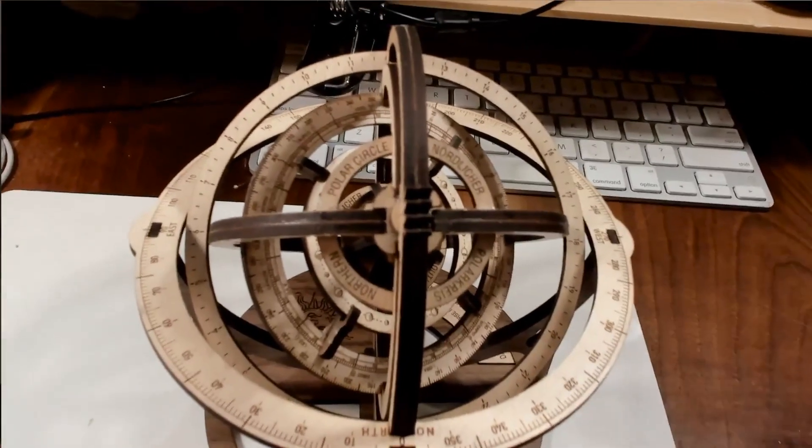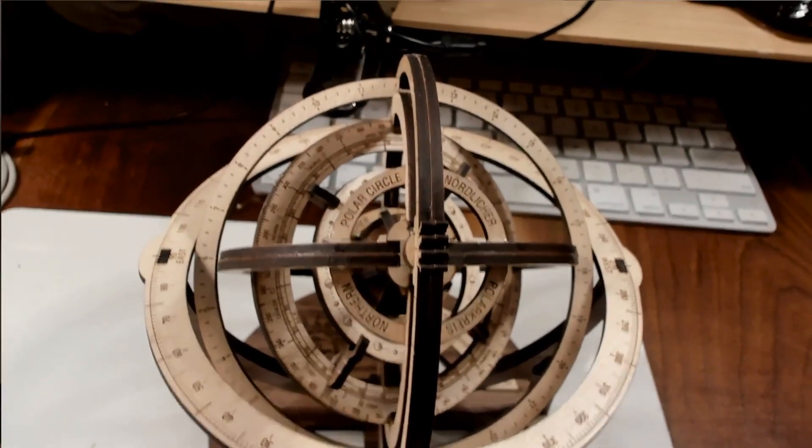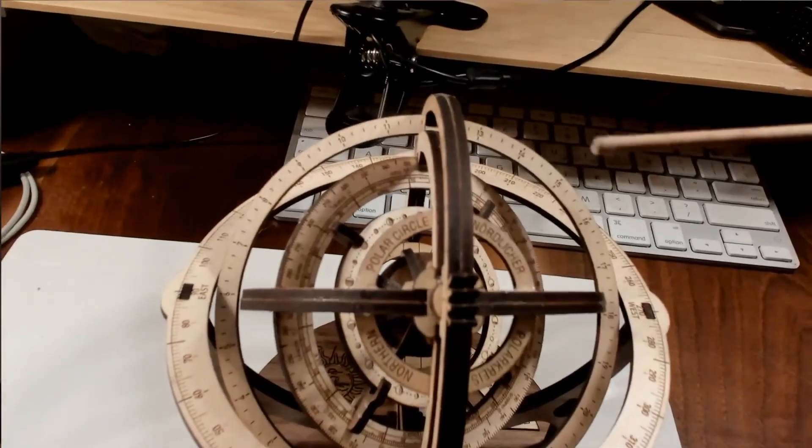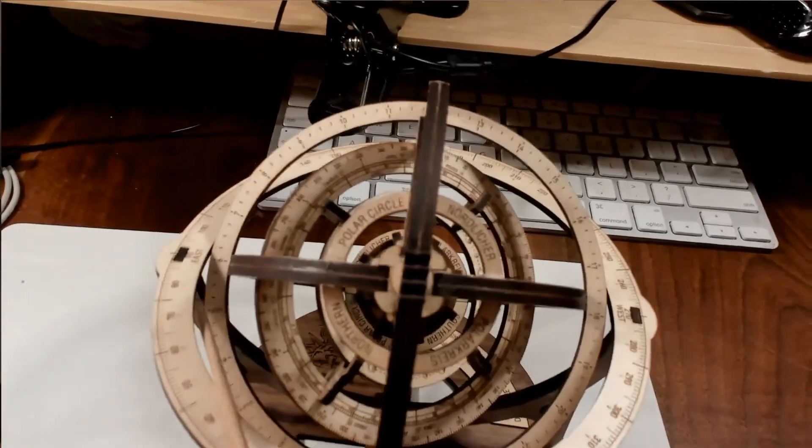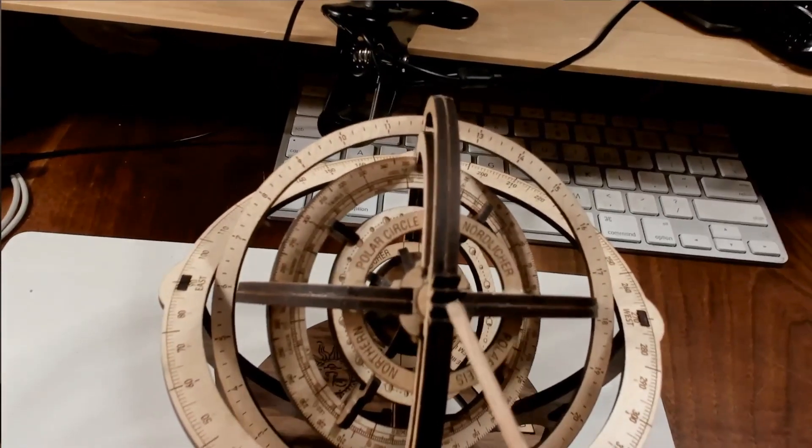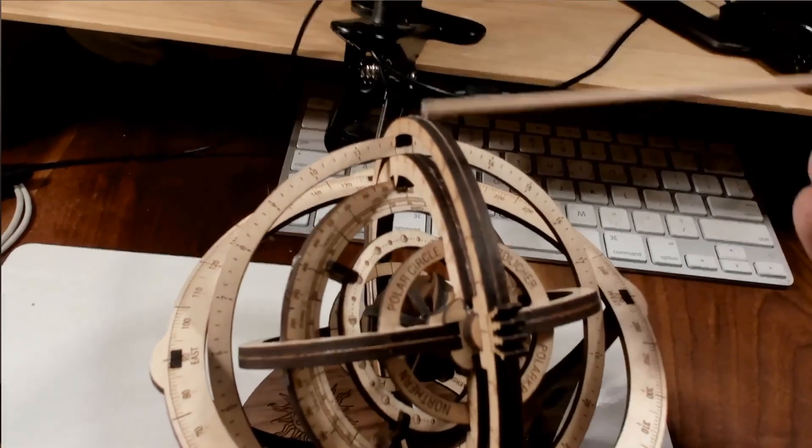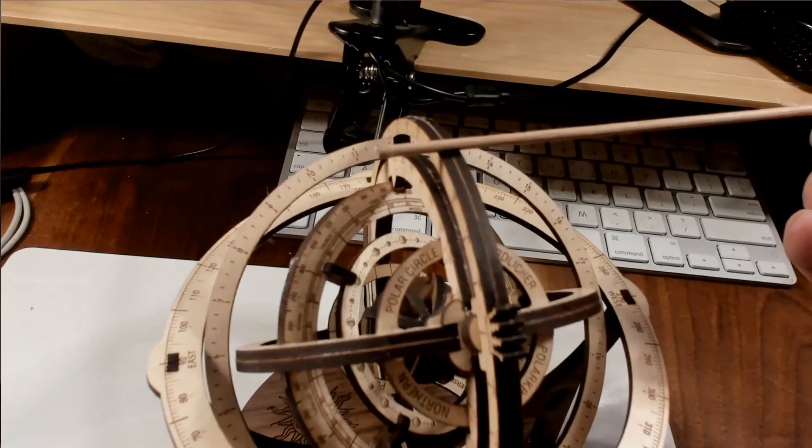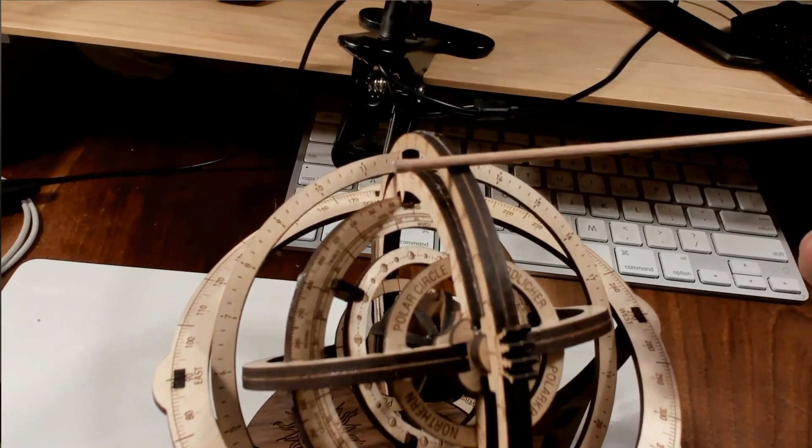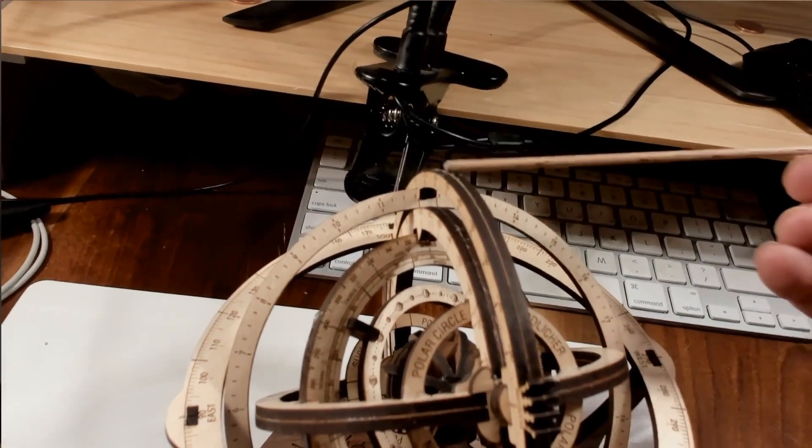Now during the construction of the armillary sphere from the kit, there are a couple of pitfalls that you can have. Let me show you the first one now. When you are putting the kit together, it's very important you have things lined up properly. Now just to give you a quick orientation, this is your horizon. This crown device here is your north star. Directly above the horizon at the top of the sphere is your zenith.